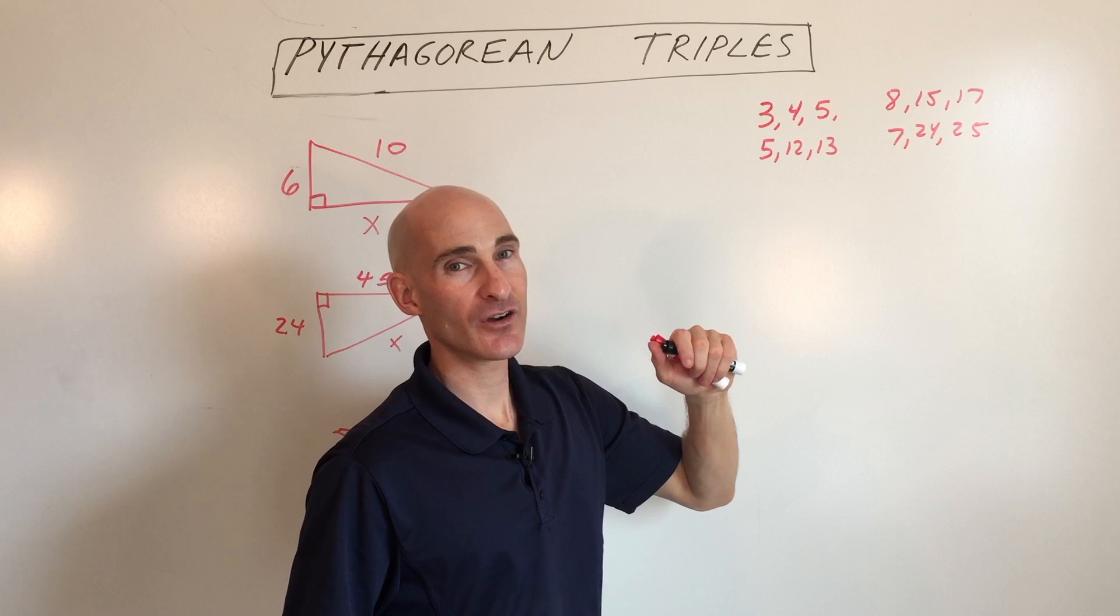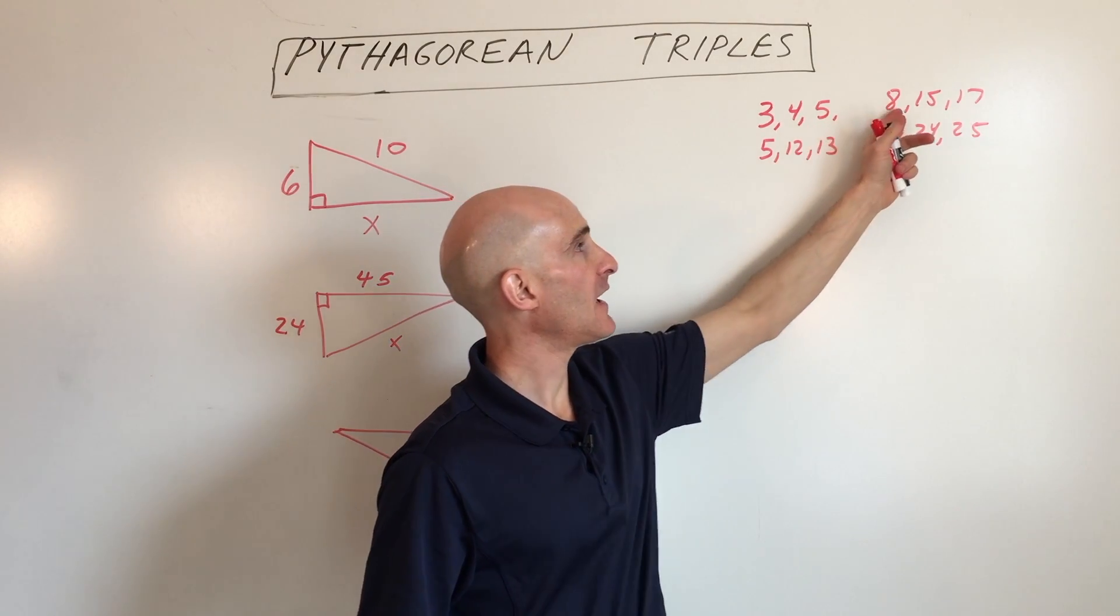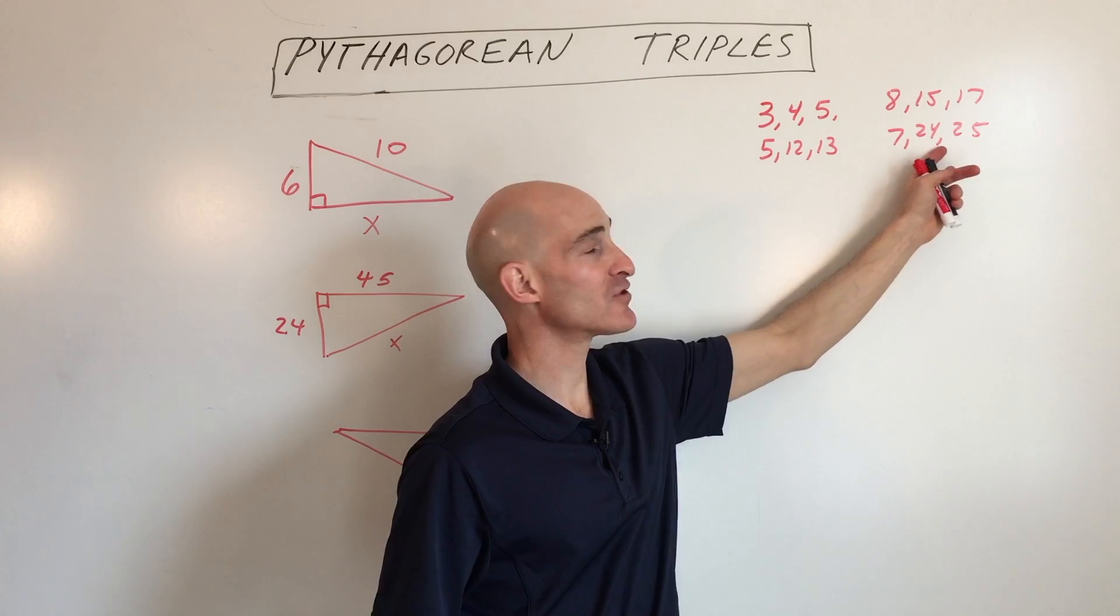3, 4, 5 - Pythagorean triple. 5, 12, 13. 8, 15, 17, and 7, 24, 25.